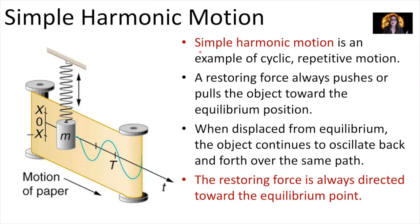Simple harmonic motion is an example of cyclic repetitive motion. Something called a restoring force either pushes or pulls the object back toward its equilibrium position. When some object is displaced from equilibrium in simple harmonic motion, the object continues to oscillate back and forth over the same path. The restoring force is always directed toward the equilibrium point.